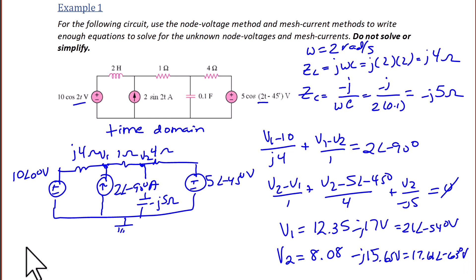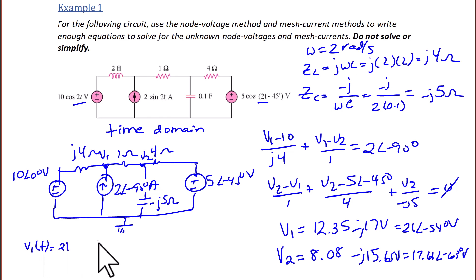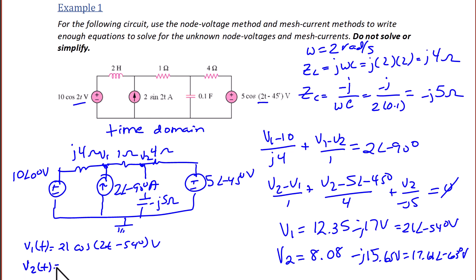Finally, writing the answers in the sinusoidal steady state time domain: V1(t) = 21 cos(2t − 54°) and V2(t) = 17.61 cos(2t − 63°).